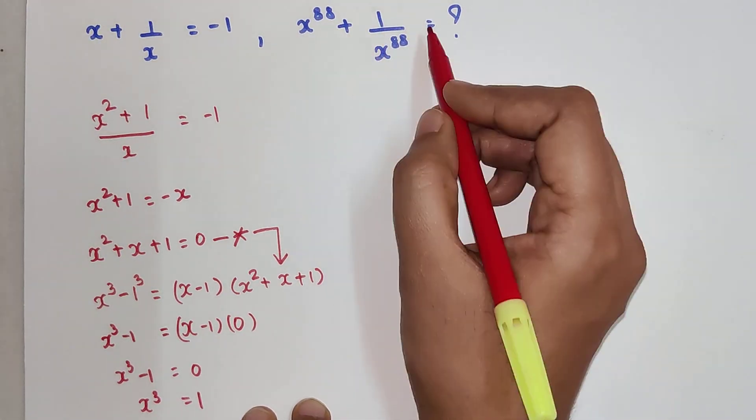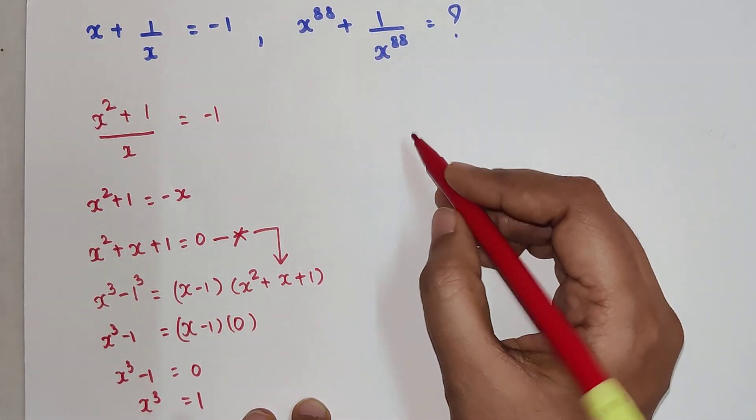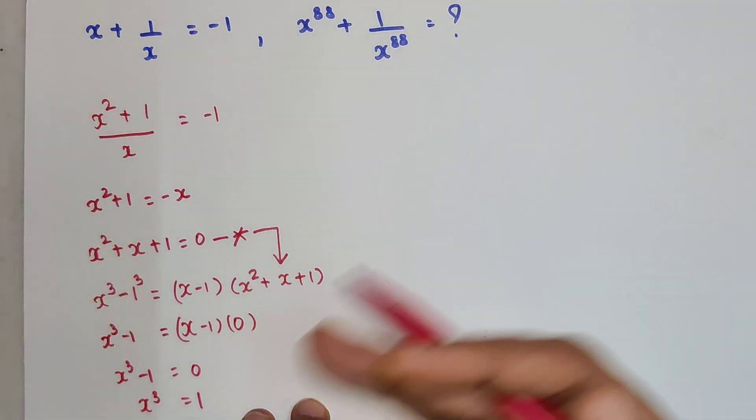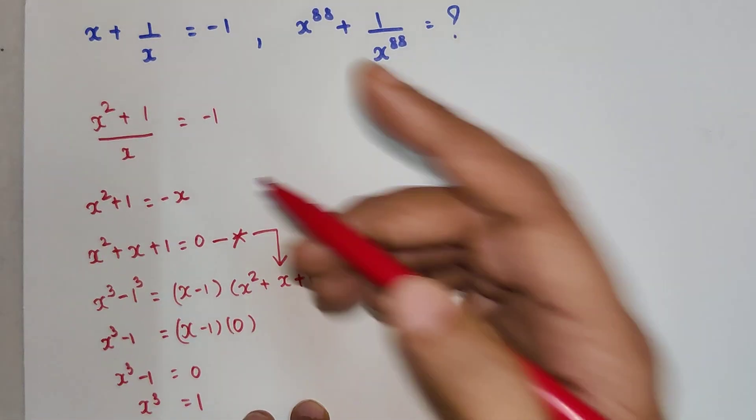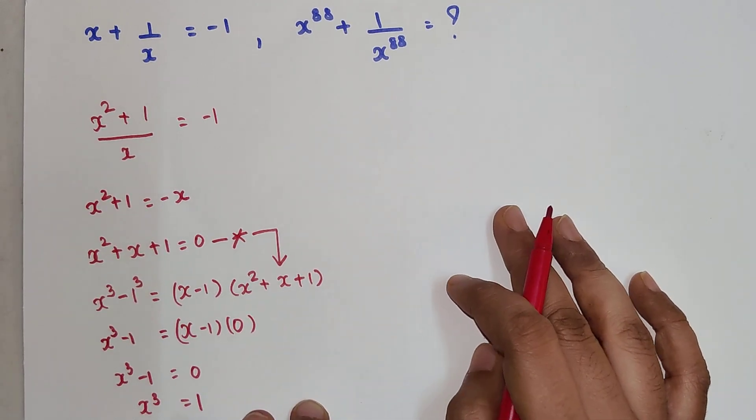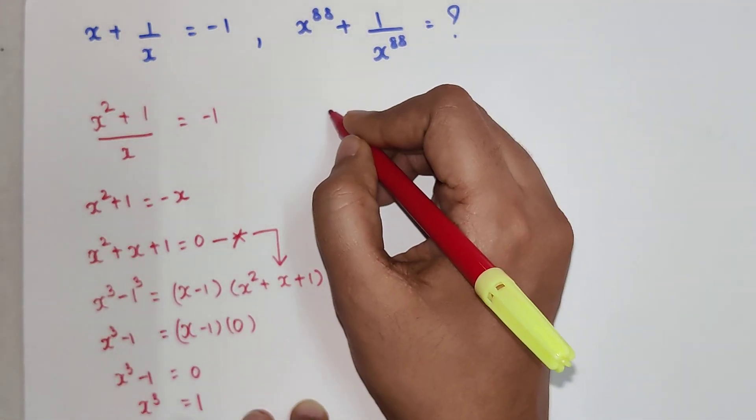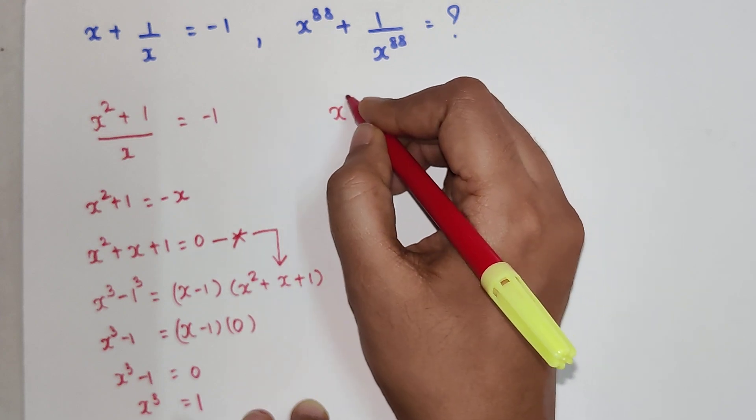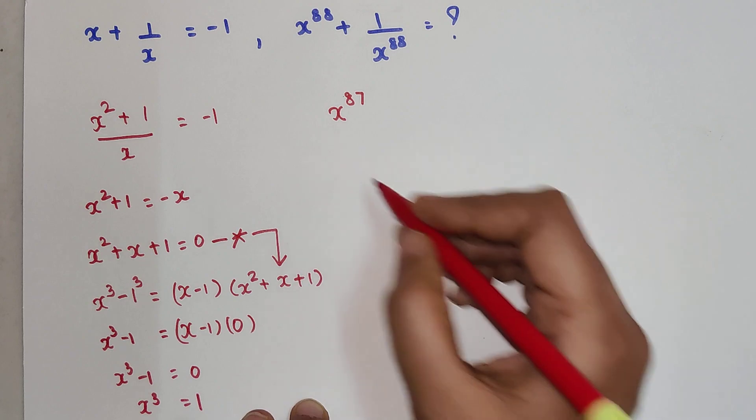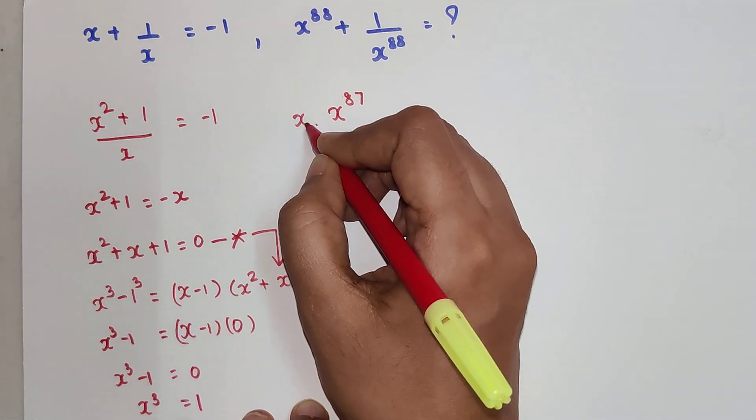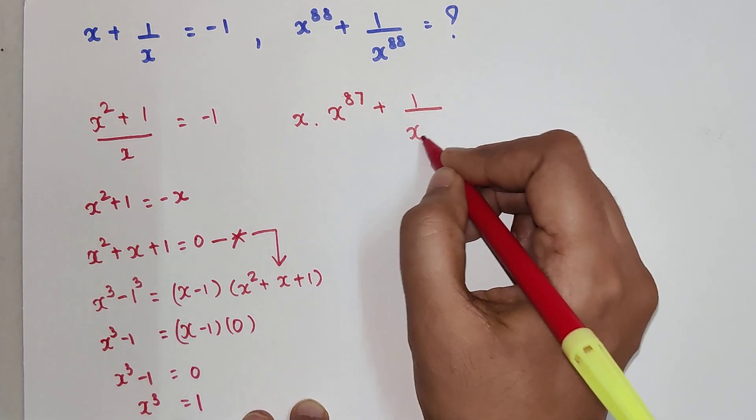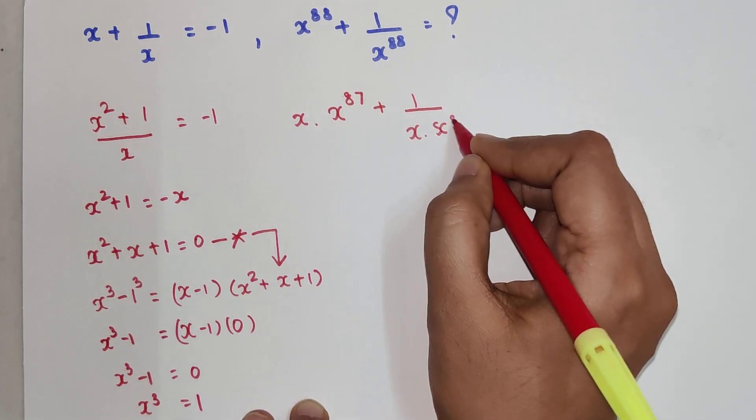Now understand what we have to find: x^88 + 1/x^88. Let's write 88 in factors of 3. I know that 88 is not completely divisible by 3, but I also know that x^87 is divisible by 3. So I can write this as x·x^87 + 1/(x·x^87).